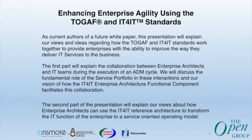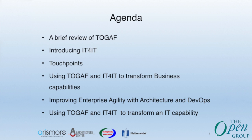This page is just talking about the white paper we're working on. We're going to start by reviewing TOGAF briefly, then I'll introduce IT4IT, which is probably less well known to you. Then I'll look at the touch points between the two — the similarities and differences — and how we can use them together to transform an enterprise's business capabilities and improve agility. We'll also talk about how architecture can work better with communities practicing agile methods, DevOps, and continuous development.